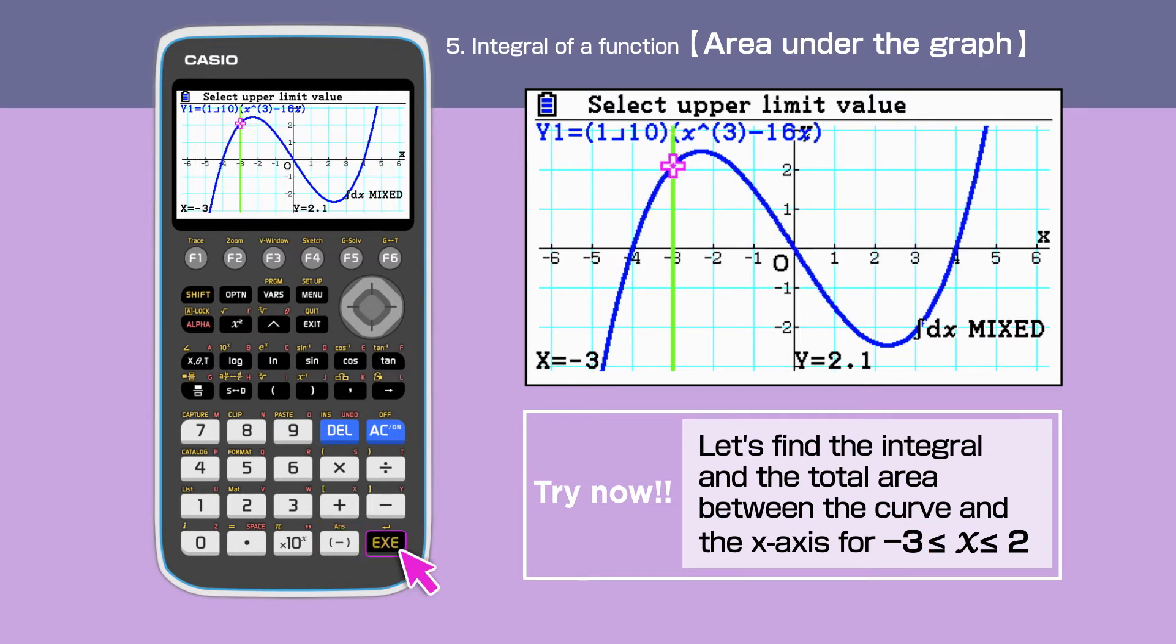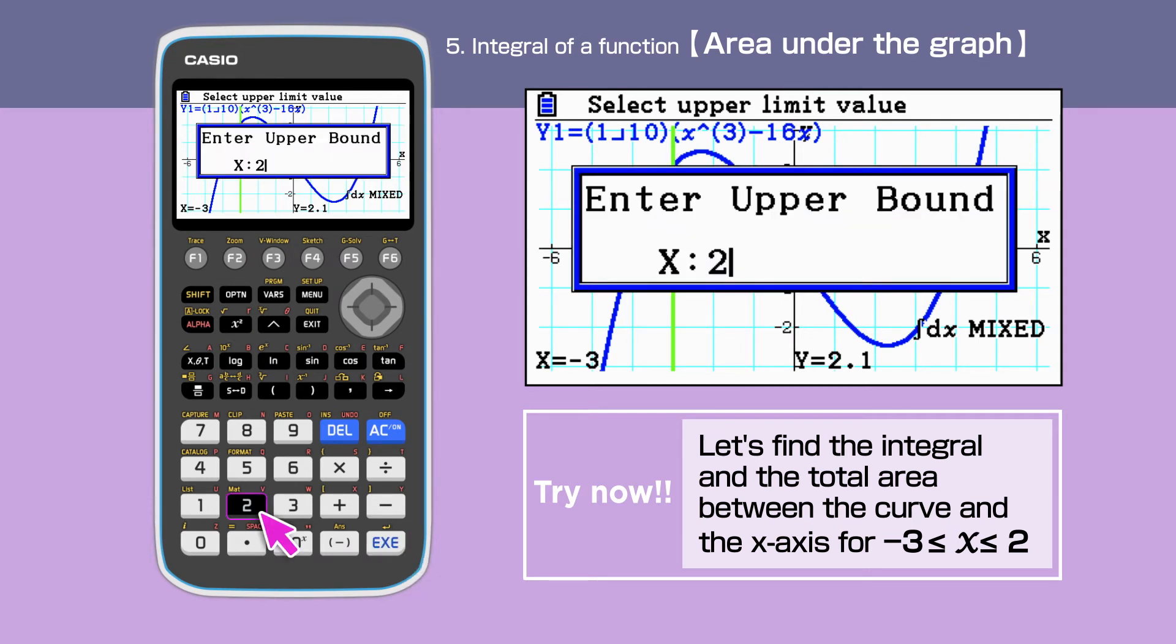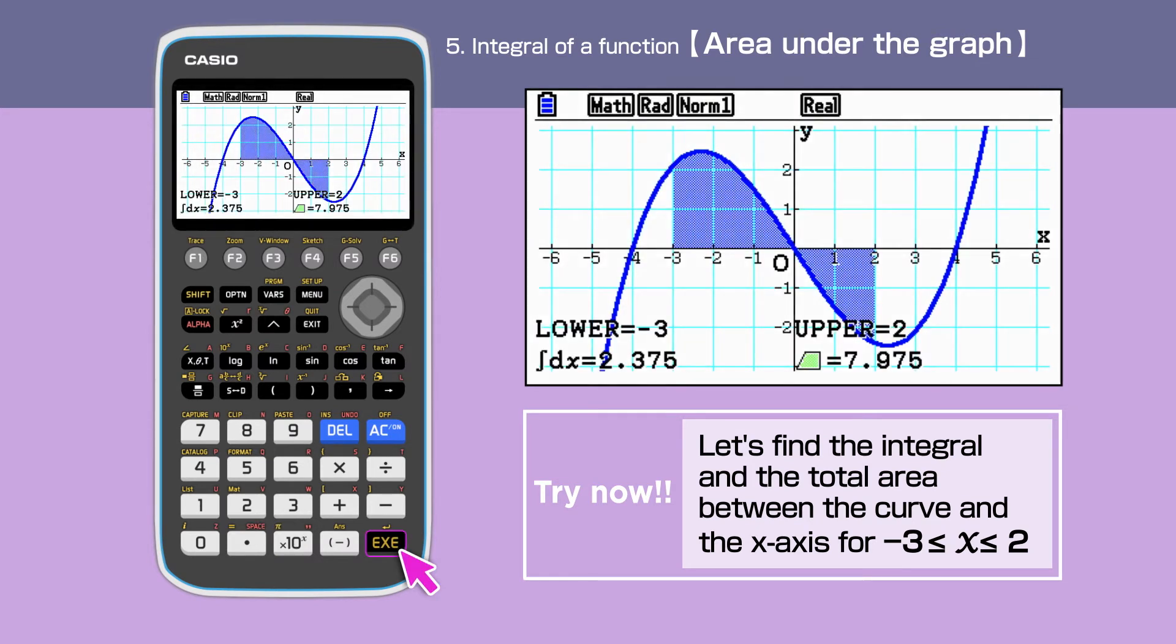Press Execute and after that, we put the upper bound, 2 for x. Press Execute again. The area enclosed is shaded and both the value of the integral as well as the total area are displayed.